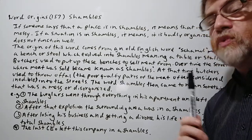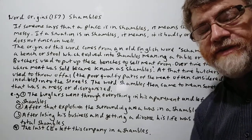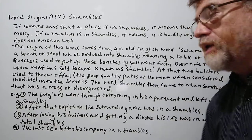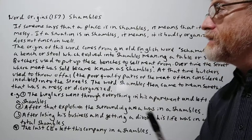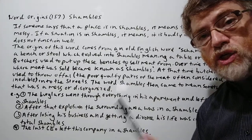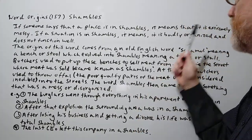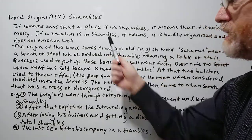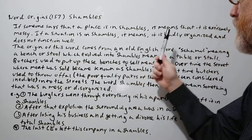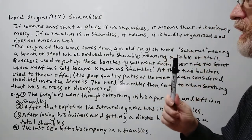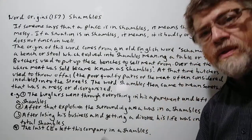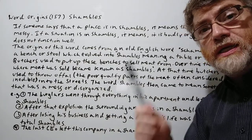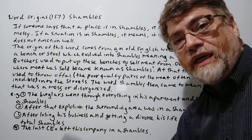Hi, this is Tutor Nick P and this is Word Origins 157. The word origin today is shambles. Let's take a look at the note here. If someone says that a place is in shambles, it means that it is extremely messy. If a situation is in shambles, it means it is badly organized and does not function well. You could also say that some place is in a shambles — either in shambles or in a shambles.